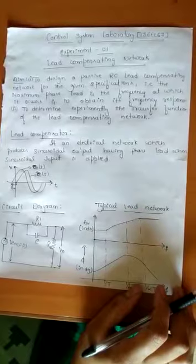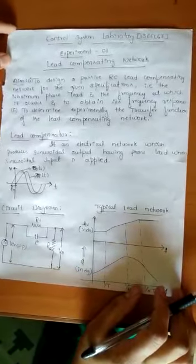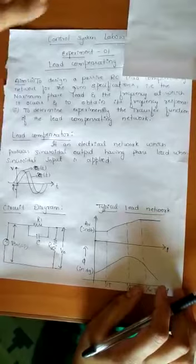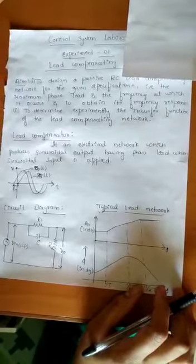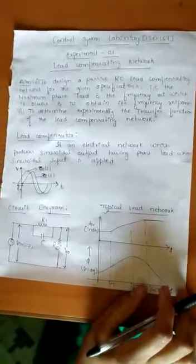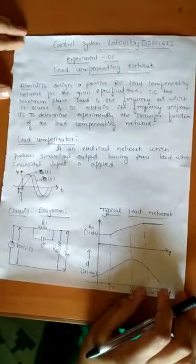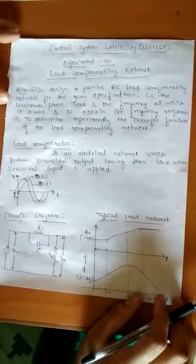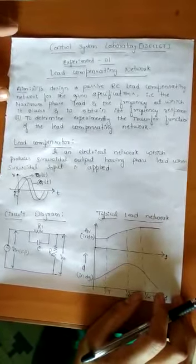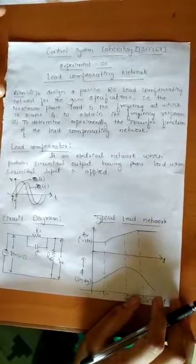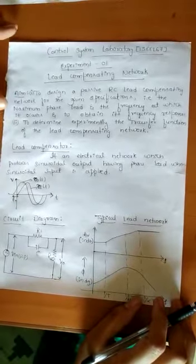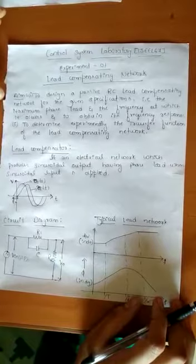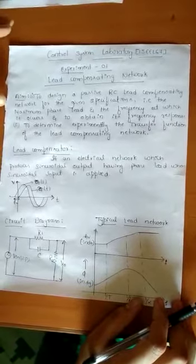We have two types of compensator. One is the active compensator and the other one is the passive type of compensator. Active compensator means the device which uses active devices like op-amps and transistors. Passive compensator means the device which uses resistors, inductors, and capacitors. The lead compensator is basically a passive type of compensator.